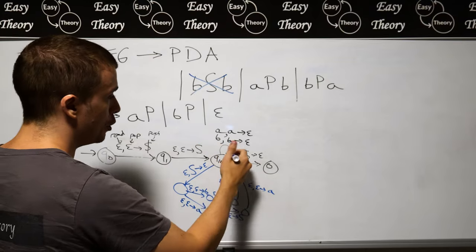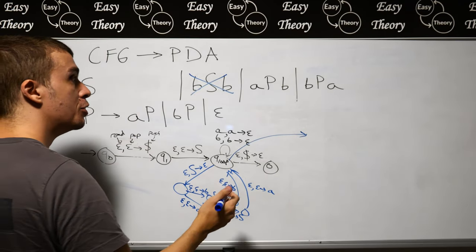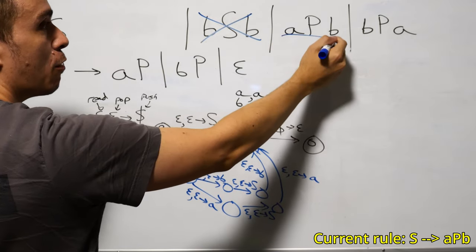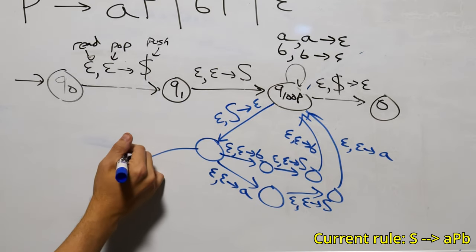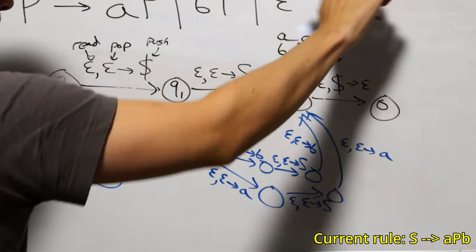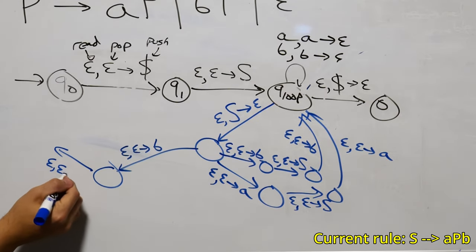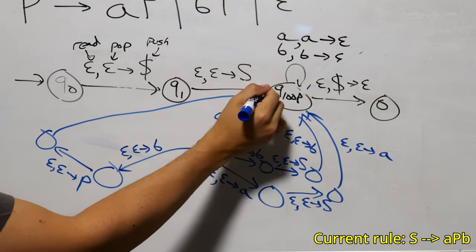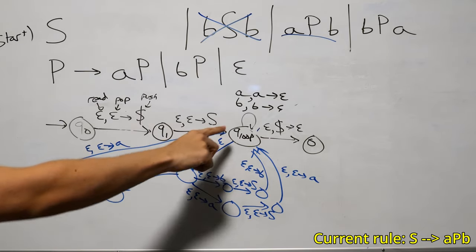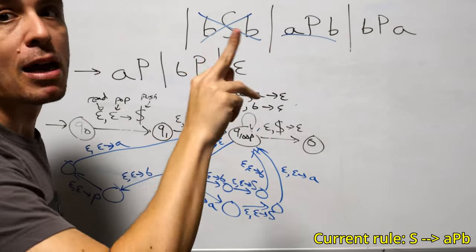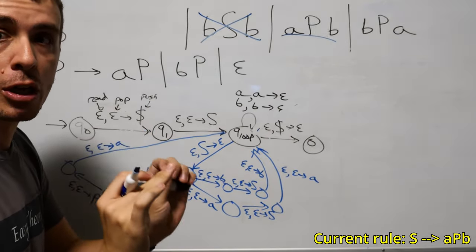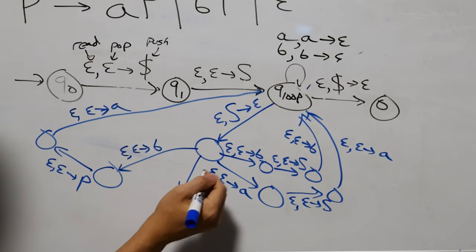Now we have the P rules. I'm going to make more room with a few more sets of transitions. I can piggyback off the existing pop-S transition for the rule S goes to BPA: B goes on first, then P, then A. Similarly for S goes to APB — again piggybacking off the same pop-S — push A, then P, then B. Since these two rules are completely symmetric, it doesn't matter which order you handle them.